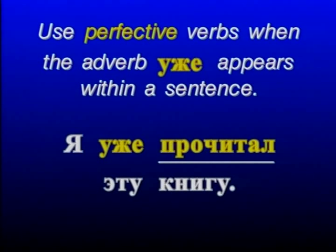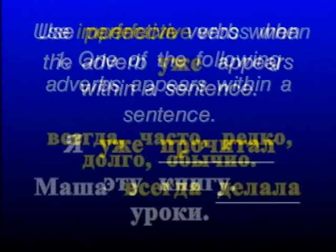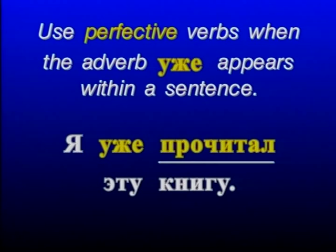And now let us very quickly go over the rules of aspect usage — those rules that help us decide whether we need to use a perfective verb or an imperfective verb. We shall begin with the rule about perfective verbs. Use perfective verbs when the adverb уже appears within a sentence. Я уже прочитал эту книгу — I already finished reading this book.